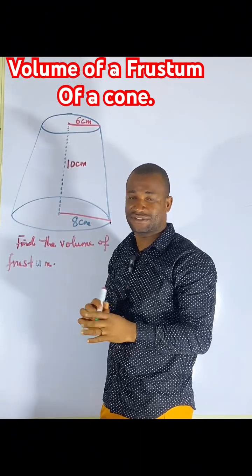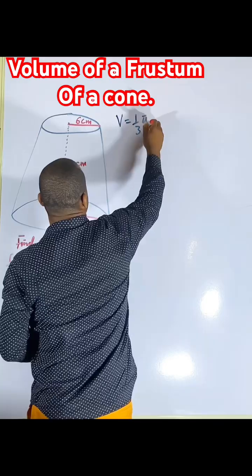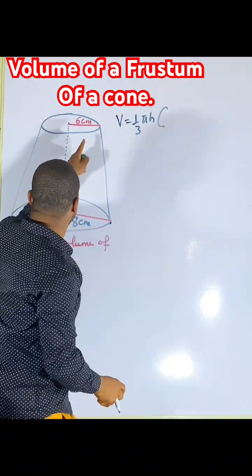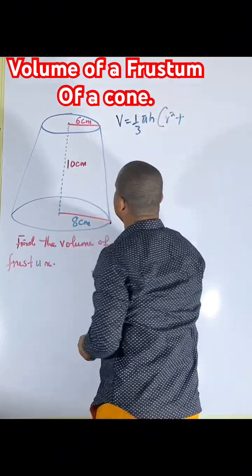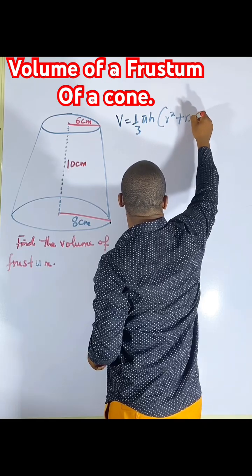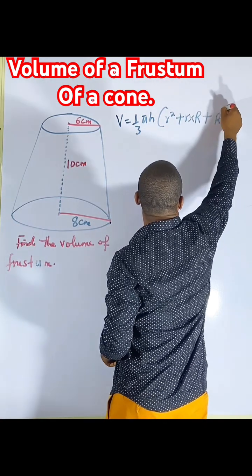I'm using a formula which will be very fast. The formula is given as V equals 1 over 3 π h, brackets: the first radius, small radius r squared, plus this radius times this radius, small r times capital R, plus the bigger radius R squared.